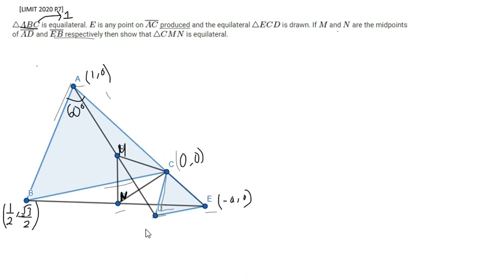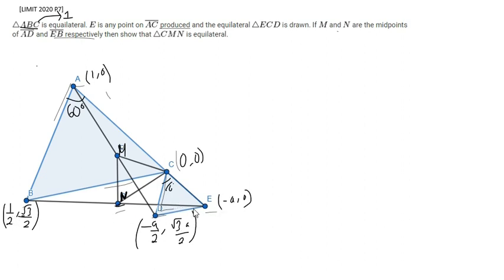By the same logic, this angle is also 60 degrees, so you can set E at (-a/2, √3·a/2). By the midpoint formula, you can see that N — the midpoint of EB — is basically (1 - a/2) divided by 2, giving (1 + 2a)/2 for the x-coordinate, and the y-coordinate is going to be (√3 - √3·a)/4.